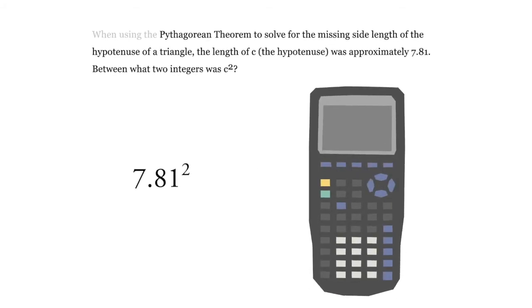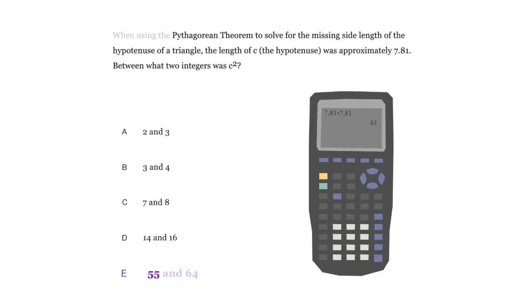Now if you have a calculator, you can just do 7.81 times 7.81 and you get the answer is 60.99, so it's about 61. So this is the correct answer. It's between 55 and 64. The others aren't even close, so it's a pretty straightforward question like that.